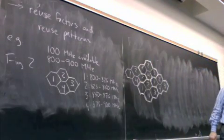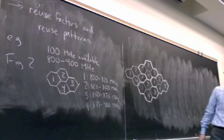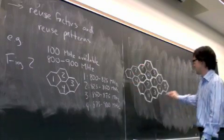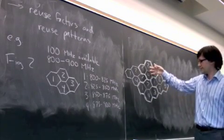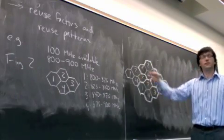So here is a region of space, roughly diamond shaped, in which I've divided this into cells. And I've used the entire bandwidth of the system a total of four times. One, two, three, four.